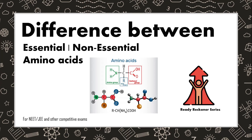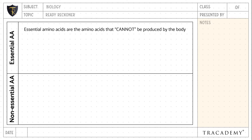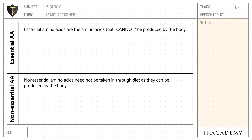In this video, let's understand the difference between essential amino acids and non-essential amino acids. Essential amino acids are the amino acids that cannot be produced by the body, whereas non-essential amino acids need not be taken in through diet.